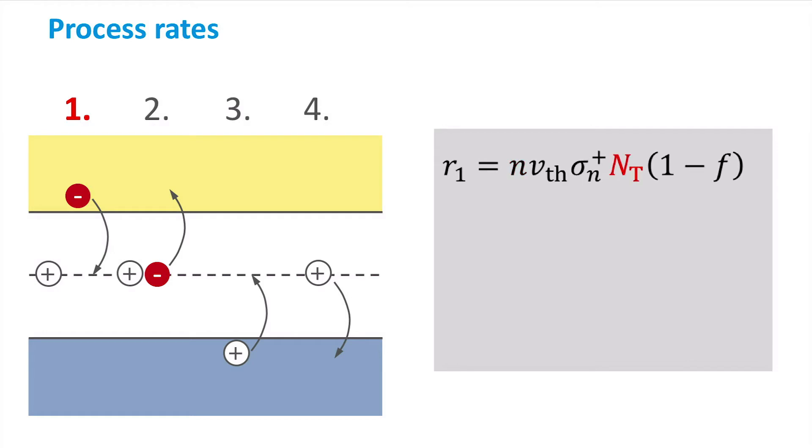It is also proportional to the trap concentration NT, since more traps can capture more electrons. This donor-like trap can only capture an electron if it is not already occupied by an electron,